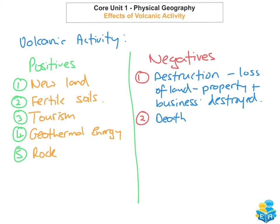The third negative impact of volcanoes would be the effect it can have on the climate. It can change temperature — sometimes there can be a change in temperature of up to 2 degrees Celsius. Because of the big cloud that's released into the atmosphere, it can sometimes block out lots of rays and cause the temperature to decrease by up to 2 degrees.